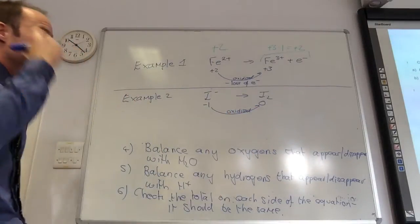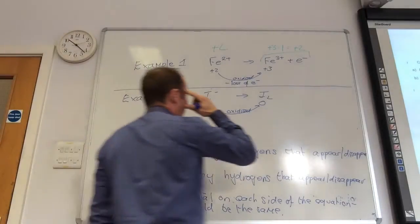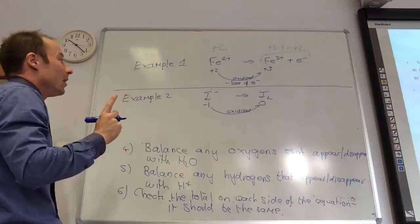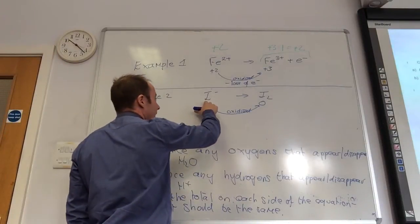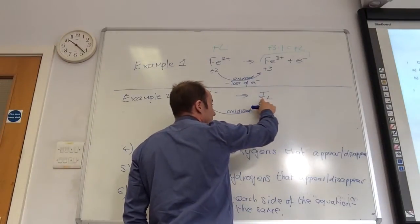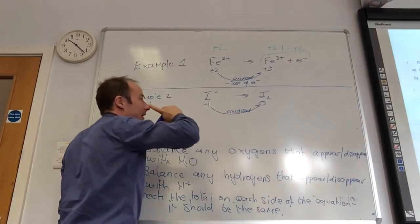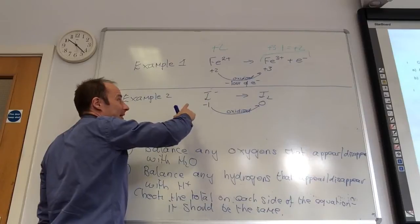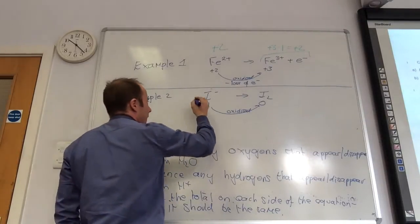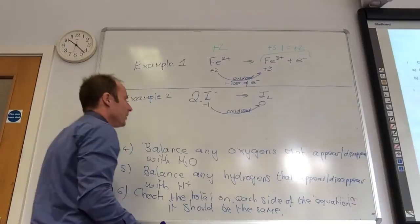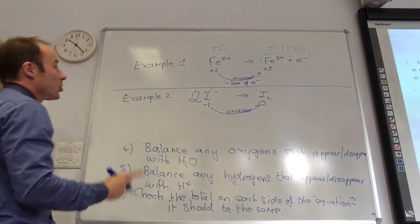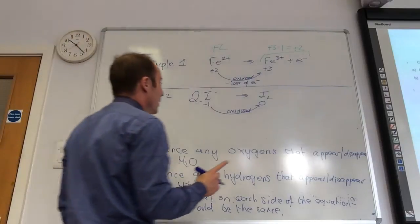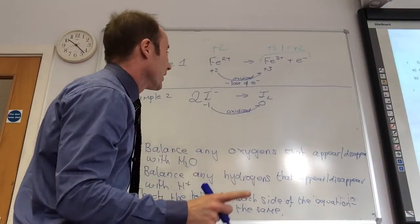So, thinking in your mind, if it's been oxidized, the electrons are going to appear on this side, aren't they? But, bit of an issue. One iodine here, two iodines here. What do I need to do? I need to balance. I need a big two there. So iodine is now, I've got two iodines on my left, two iodines on my right, so that's okay.